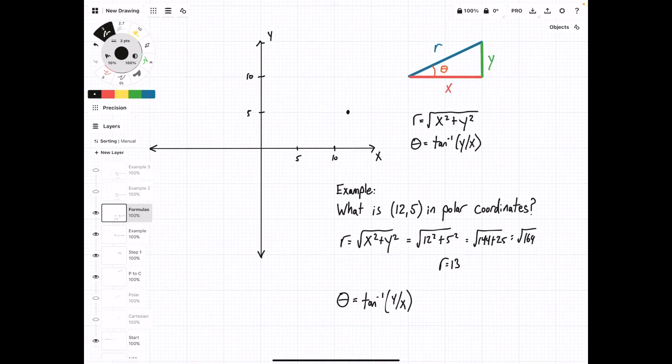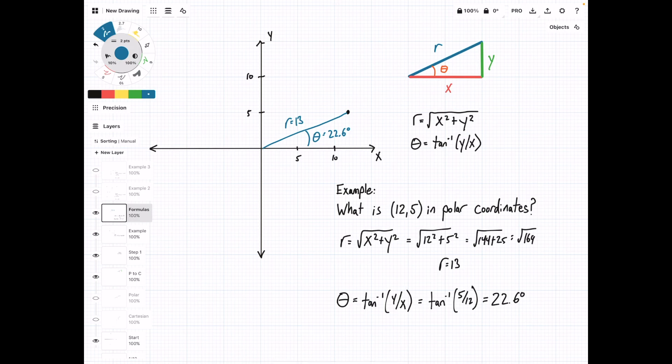And do the same thing for theta. This is going to be the arc tan of 5 over 12, and it will equal 22.6 degrees. So we can draw this out on our coordinate system. This length is r equals 13, and this angle theta is equal to 22.6 degrees.